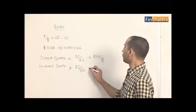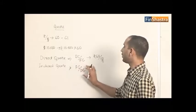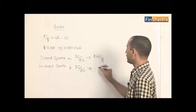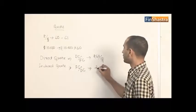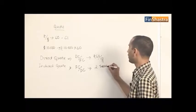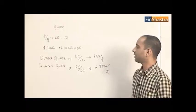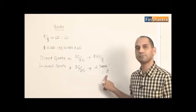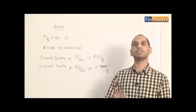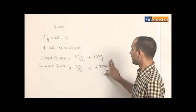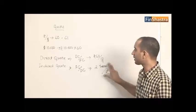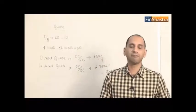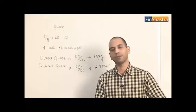An indirect quote for an Indian places the foreign currency in the numerator and domestic currency in the denominator. For example, suppose two Bangladeshi takas make one Indian rupee — this is an indirect quote for us because the domestic currency is the base and the foreign currency is in the numerator. This would be an example of a direct quote from the Bangladeshi perspective.